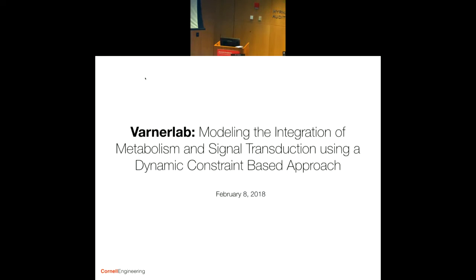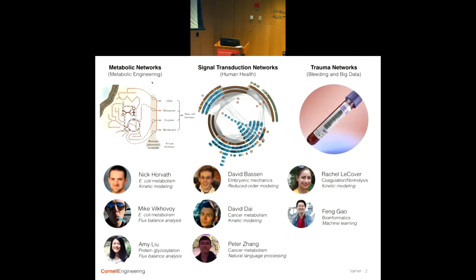What I'm going to talk about today is work that's going on in my lab. My lab is split roughly into three areas: metabolic engineering, which we'll talk a little bit about today, signal transduction, and looking at blood coagulation and trauma. What we're going to talk about today is the integration of metabolic engineering and signal transduction in the context of trying to understand how a model leukemia cell differentiates when given a nutritional cue. The work today will be done by David Dye, who's a third-year graduate student in our lab.